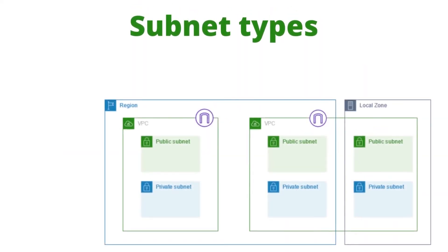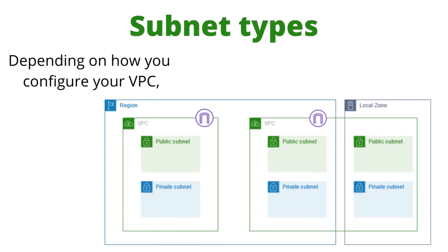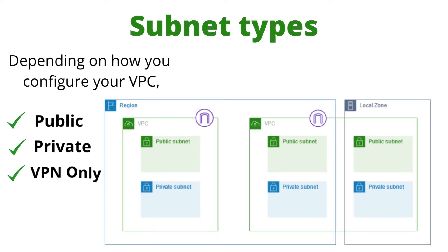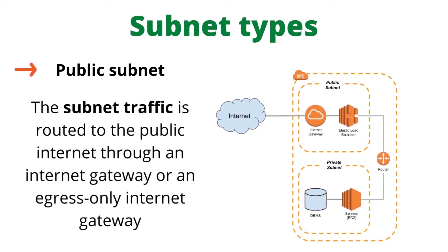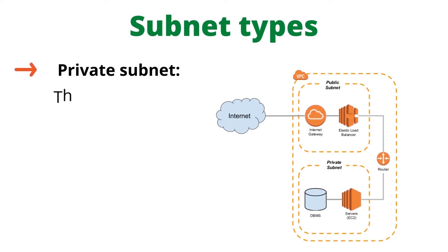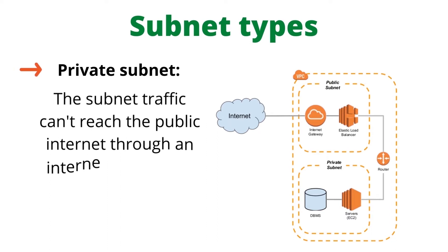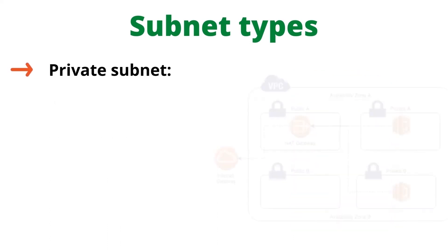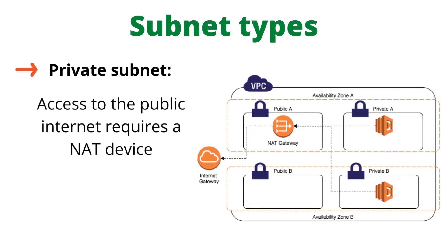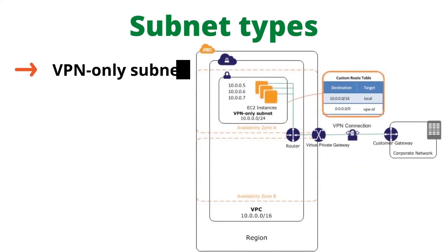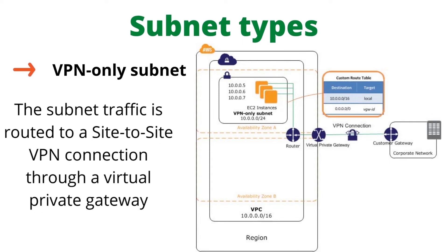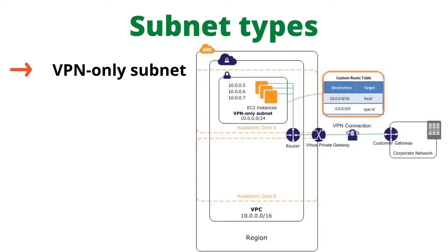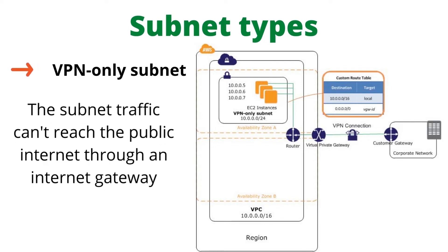Subnet types: depending on how you configure your VPC, subnets are considered public, private, or VPN-only. A public subnet has traffic routed to the public internet through an internet gateway or egress-only internet gateway. A private subnet's traffic can't reach the public internet through an internet gateway; access requires a NAT device. A VPN-only subnet has traffic routed to a site-to-site VPN connection through a virtual private gateway and cannot reach the public internet through an internet gateway.